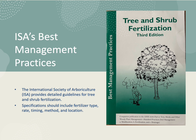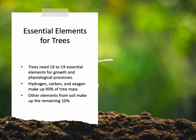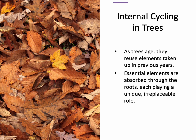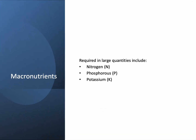The ISA best management practices for tree and shrub fertilization offers detailed guidelines. The plan should define objectives, application rate, timing, method, and location. Trees require 16 to 19 essential elements. Hydrogen, carbon, and oxygen make up 90% of the tree's mass; the rest are absorbed from the soil. In a natural environment, as the tree ages it reuses elements taken up in previous years — leaf litter falls, breaks down, and is taken up again. Each essential element plays a unique, irreplaceable role.